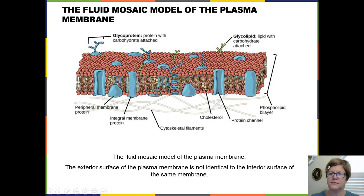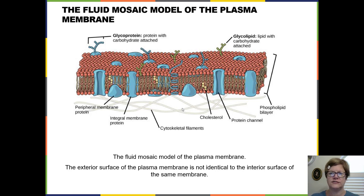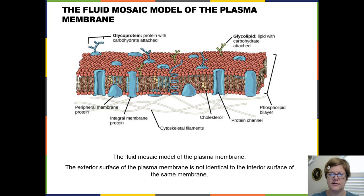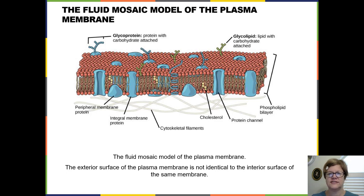The fluid mosaic model is depicted here, though you don't see the dynamic movement of the components because they're not static. The phospholipids have heads shown here in orange, facing either the outer or inner surface of the cell. The hydrophobic tails are in the middle, making a layer that's impermeable to liquid, keeping what's supposed to stay out of the cell out, and what's supposed to stay in, in.